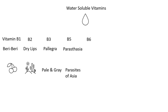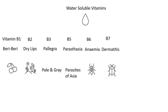B6 deficiency causes anemia and can be called ant to make it easy to remember. B7 deficiency causes dermatitis and can be linked to termites. There is no vitamin B8, so let's go to B9 and B12.